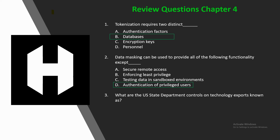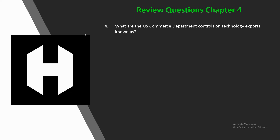Question 3: What are the U.S. State Department controls on technology exports known as? A) ITAR, B) EAR, C) EAL, or D) IRM? The answer is A, ITAR, because ITAR is a Department of State program. Question 4: What are the U.S. Commerce Department controls on technology exports known as? A) ITAR, B) EAR, C) EAL, or D) IRM? The answer is B, EAR — the Export Administration Regulations is a Department of Commerce program.